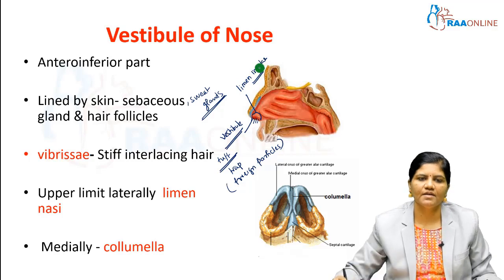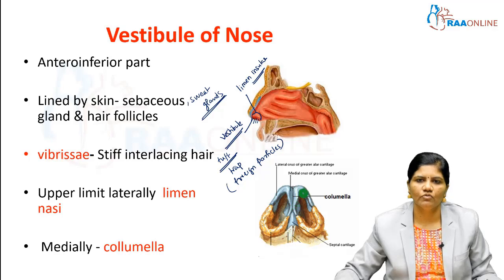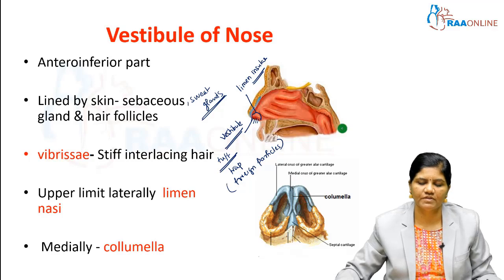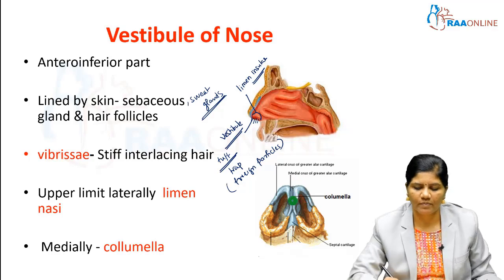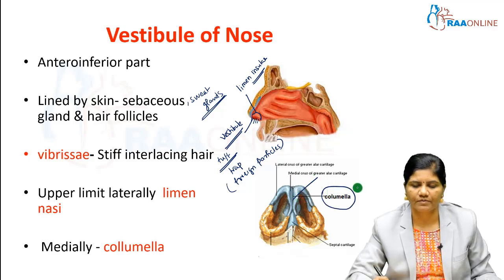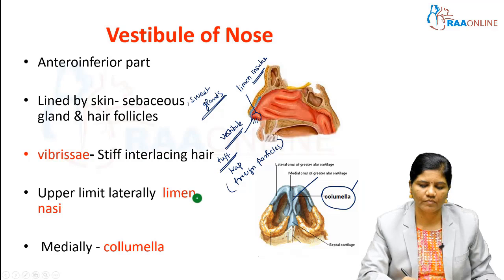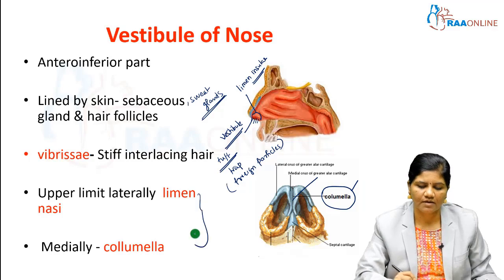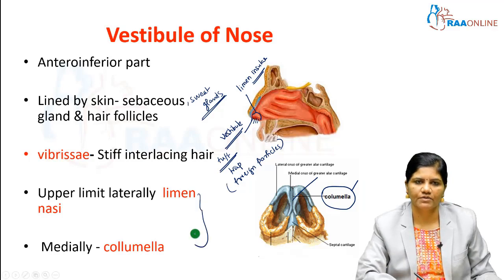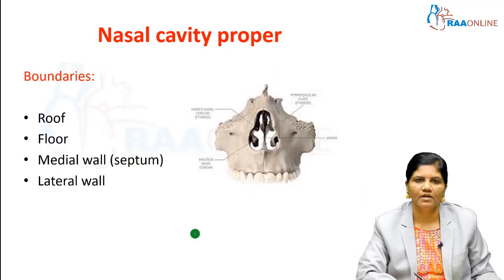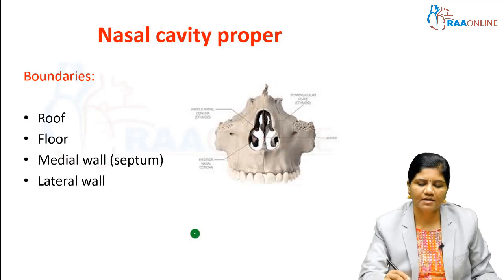Medially, the upper limit is formed by the columella. The columella is the meeting point of the two major alar cartilages — in the midline it forms the mobile part of the septum, which is known as the columella. Both the columella and the limen nasi are mobile parts. Now let's see the nasal cavity proper.